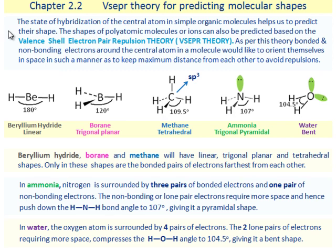The shapes of polyatomic molecules or ions can also be predicted based on the valence shell electron pair repulsion theory, also known as VSEPR theory. As per this theory, bonded and non-bonding electrons around the central atom in a molecule orient themselves in space to keep maximum distance from each other to avoid repulsions. Beryllium hydride, borane, and methane will have linear, trigonal planar, and tetrahedral shapes — only in these shapes are the bonded pairs of electrons farthest from each other.